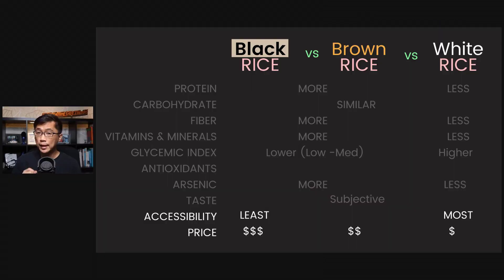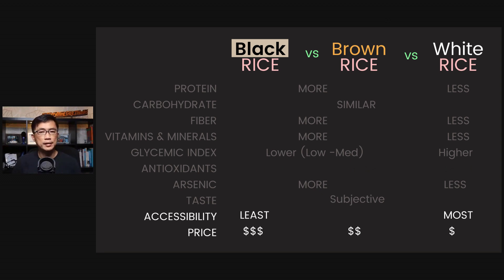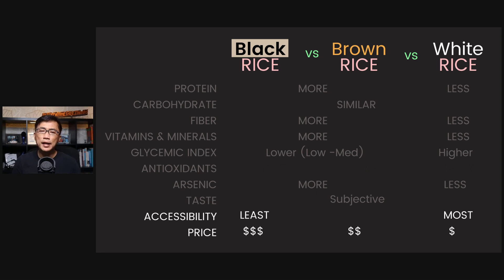When it comes to price and accessibility, black rice is the least common and the most expensive. You may not be able to find black rice in smaller supermarkets — usually you have to go to bigger supermarkets, specialty grocery stores, or online stores. The price of black rice can be a few times that of equivalent white rice.